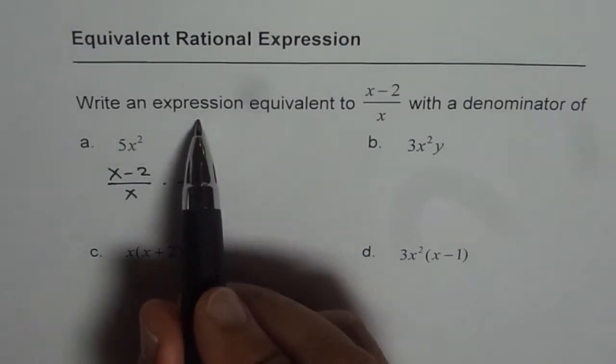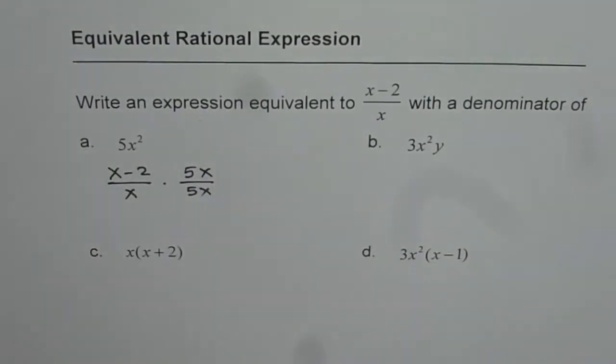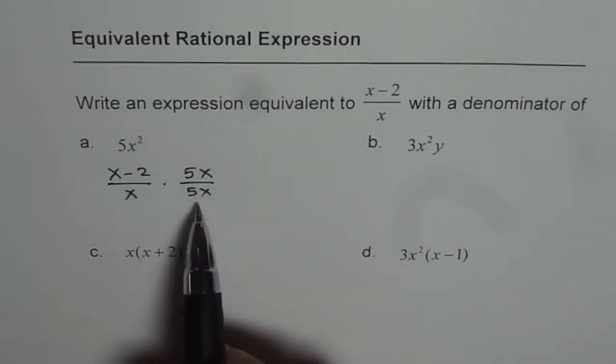But we need an equivalent expression. Correct? That means I should also multiply the numerator by 5x. So that's the whole idea. Multiplying by 5x over 5x is as good as multiplying by 1.